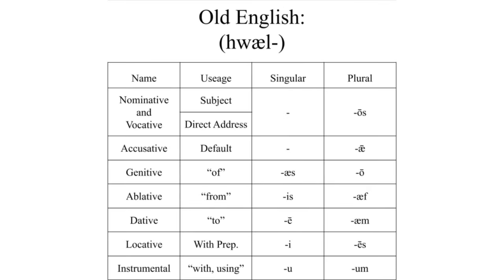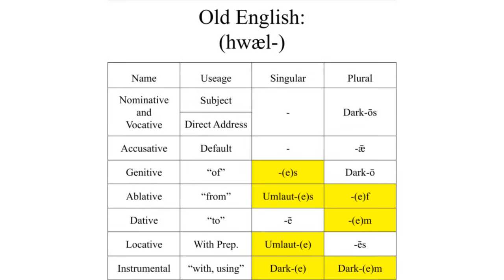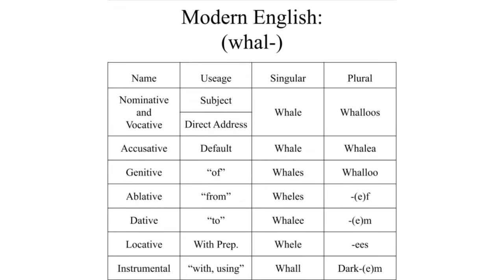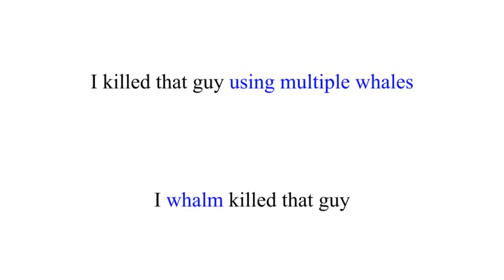As we go into Old English, A and E from O and E merge into E in an unstressed final syllable. All unstressed vowels are going to disappear or become schwa depending on phonotactics, so let's just skip to Modern English. Nominative and accusative: 'whale'; genitive: 'whales'; ablative: 'wheels'; dative: 'whaley'; locative: 'wheel'; instrumental: 'wall.' Plurals: nominative 'walloos,' accusative 'whaley' (with an A), genitive 'walloo,' ablative 'whalef,' dative 'whalm,' locative 'whaleys,' instrumental 'walm.' You could say 'I won't kill that guy' instead of 'I kill that guy' using multiple case forms of 'whale' — that would save so much time, why isn't this already a thing?